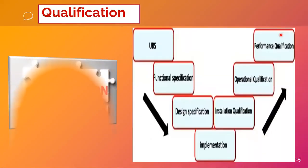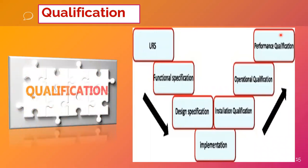Now we come to qualification. We have already discussed in a previous video what the minimum requirements are. For balance qualification, you need to prepare a URS — User Requirement Specification — and a functional specification. The URS defines the weighing range and that it must fulfill USP Chapter 41. Functional specifications can include user ID management, audit trails, password management policies, and server data storage. The design specification will be provided by the vendor, and then you proceed to installation, operation, and performance qualification.